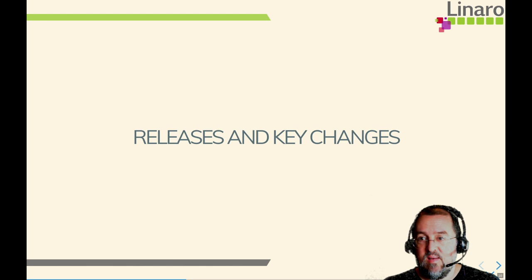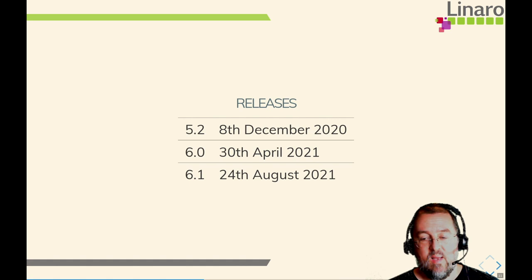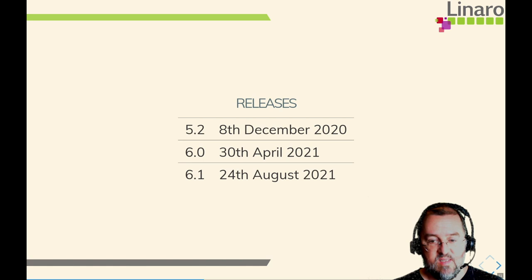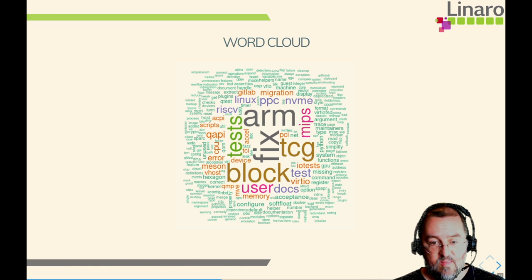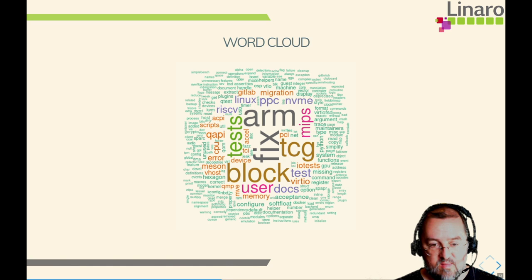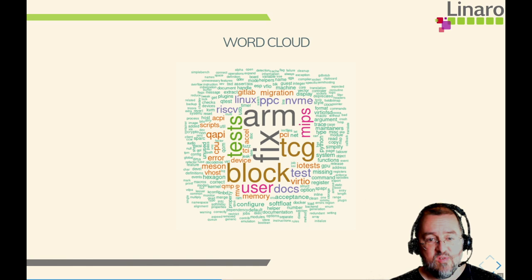Now let's have a look at the releases and some of the key changes. We seem to be keeping well up with our regular three releases a year cadence, and I don't see anything indicating that's going to change anytime soon. I did a word cloud plot of all the various things mentioned in the subject lines of commits. As you'd expect, all the major architectures are there — PowerPC, ARM, MIPS — as well as subsystems such as the block subsystem and TCG. It's also quite gratifying to see a lot of mention of testing.